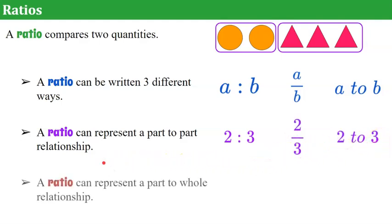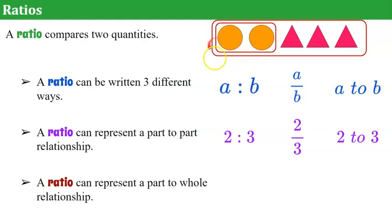We can also have a ratio represent a part-to-whole relationship. So if we talk about just our circles being our part of our whole, then we have two circles out of the five objects, or 2/5, or two to five. We could have also said our part was our triangles, which would have then been 3/5, or three to five.